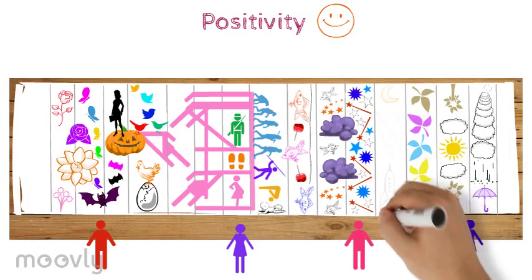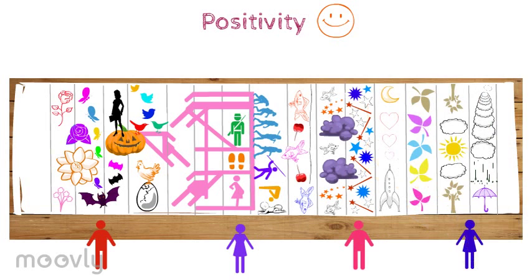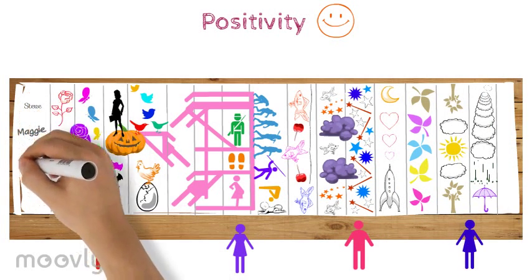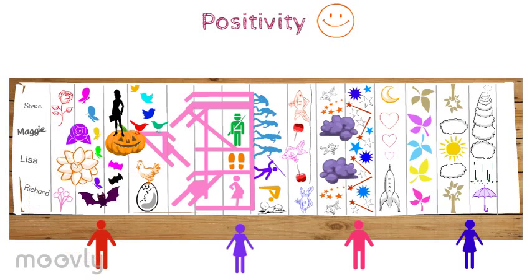When the drawing is complete, everyone will write their names in the left remaining strip on the paper. Now you ask the team what they personally see in the complete picture and how it relates to team positivity for them. Their interpretation will be written down on the right strip.